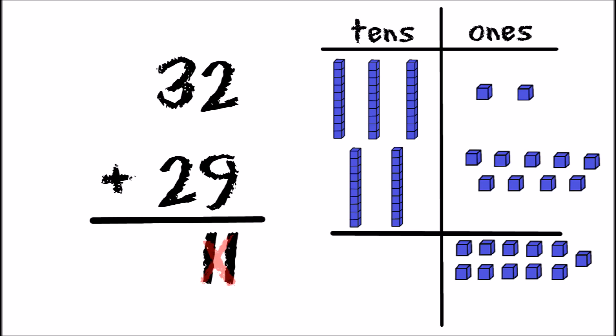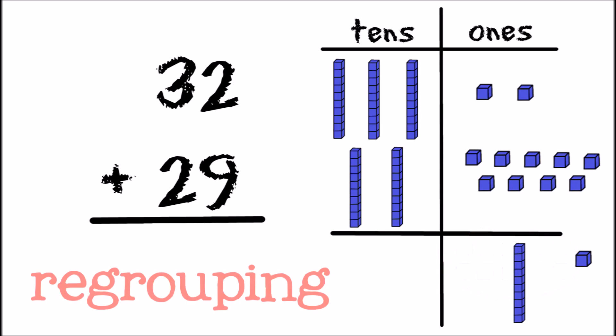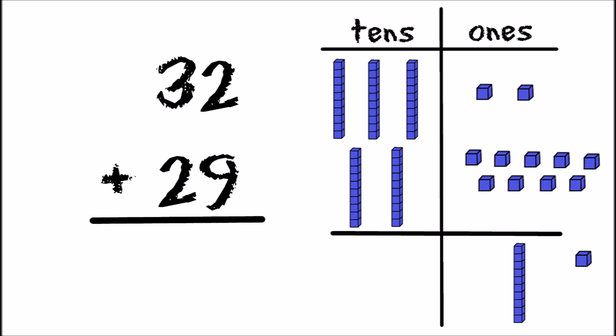But we can't write that in our ones column. Our ones column is only for numbers less than ten. So we have to change ten of our ones into a ten-block stack — something we call regrouping. That means we only have one single block left, so in the ones column we will write one. But now we have to do something with that ten-block stack. Where do tens go? In the tens column. So we move it over into our tens column, which sometimes we call carrying.